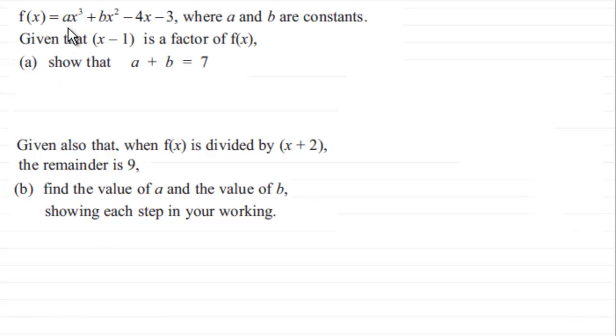Okay, welcome back if you had a go. Let's see how you got on. We've got f of x equals ax cubed plus bx squared minus 4x minus 3, where a and b are constants. We're given that x minus 1 is a factor of f of x, and we've got to show that a plus b equals 7.